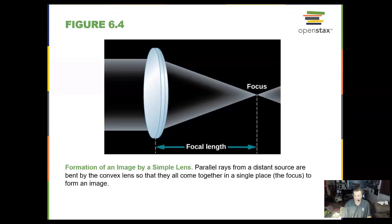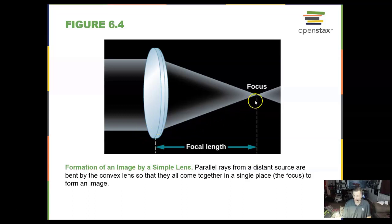The formation of an image by a simple lens has parallel light coming into the lens, being focused all into a focus point. And that is where you would view the image in focus.